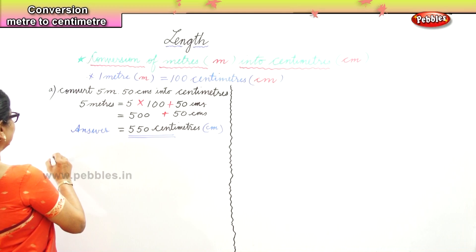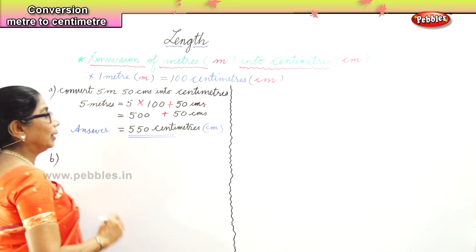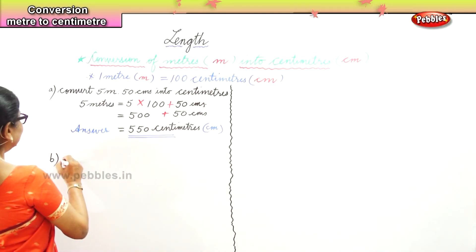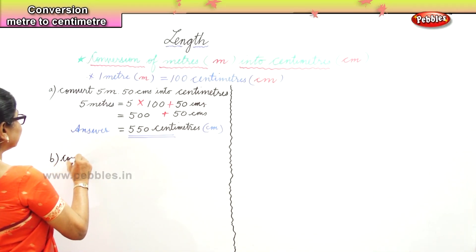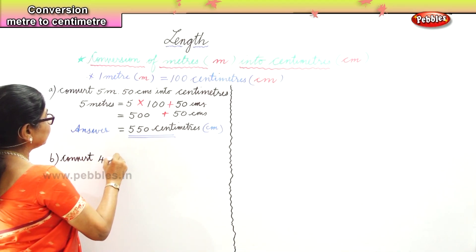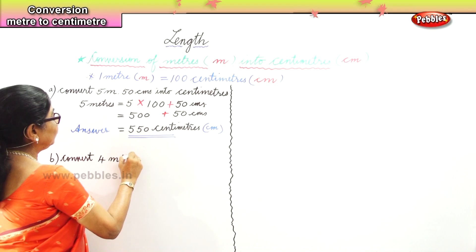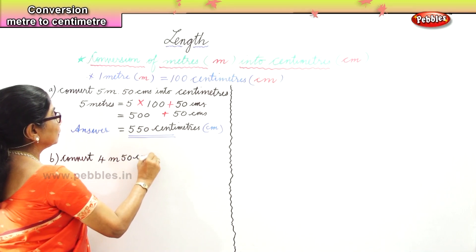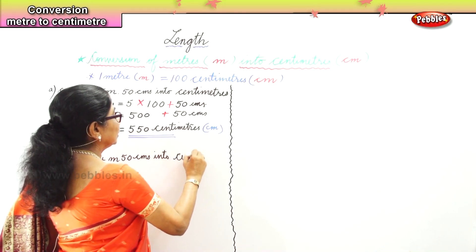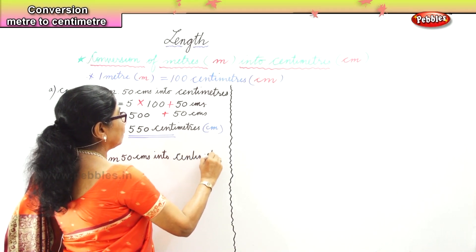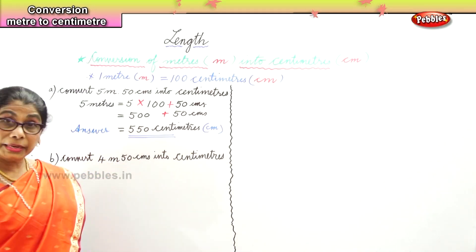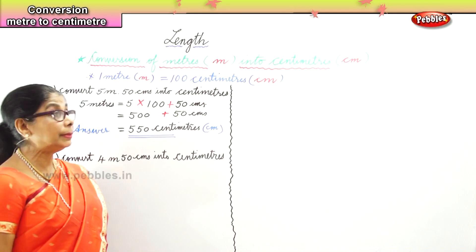Let me give you another sum. Let's work out another sum now. Convert 4 meters 50 centimeters into centimeters.